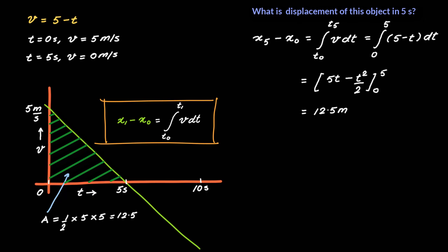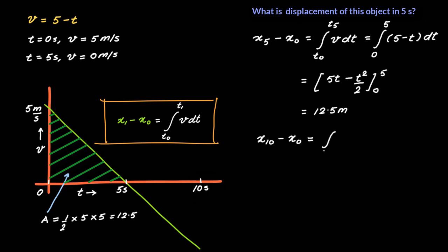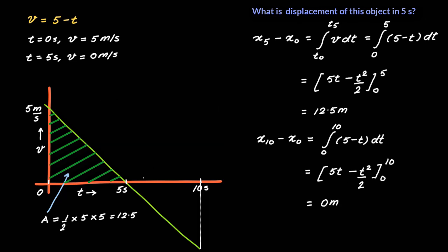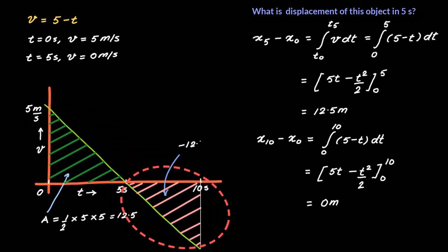Now, if you're asked what is the displacement between 0 seconds and 10 seconds, we can use the same equation but just change the limits. So what we get is x10 minus x naught is equal to integral of (5 minus t) dt, limits changing from 0 to 10 seconds. And when you solve this, what you get is 0 meters. The answer should not surprise you because this area is 12.5 meters squared, but this area below the x-axis is minus 12.5 meters squared. So any area which falls below the x-axis needs to be taken as a negative area, and therefore the two areas add up to give 0 area and therefore 0 displacement.